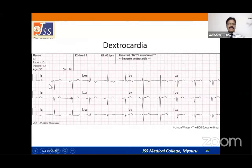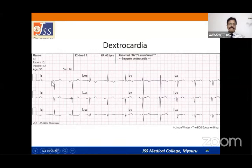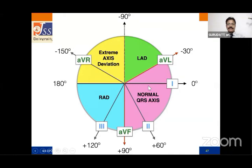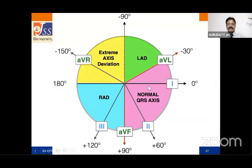Dextrocardia: in lead I, you will see a negative P wave — normally the P wave in lead I is always positive. Also in aVR, instead of the usual negative complexes, you will see a positive R wave. These findings together — negative P wave in lead I and positive R wave in aVR — allow you to diagnose dextrocardia. Normal QRS axis is minus 30 to plus 110 degrees; to assess axis, look at leads aVF (vertical) and lead I (horizontal), which are perpendicular to each other.